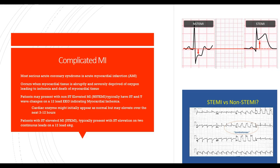Looking at EKG changes: for NSTEMI, if we look at the isoelectric line, we see the P wave indicating atrial contraction followed by a normal QRS. As the S comes up to the positive inflection, the J point should return to the isoelectric line, but instead it starts below the isoelectric line — that is ST depression, indicating ischemia. ST elevation, the classic tombstoning pattern, represents STEMI. The P wave, QRS, and then instead of the S coming back down to the isoelectric line, ventricular repolarization occurs way above it — that is ST elevation.